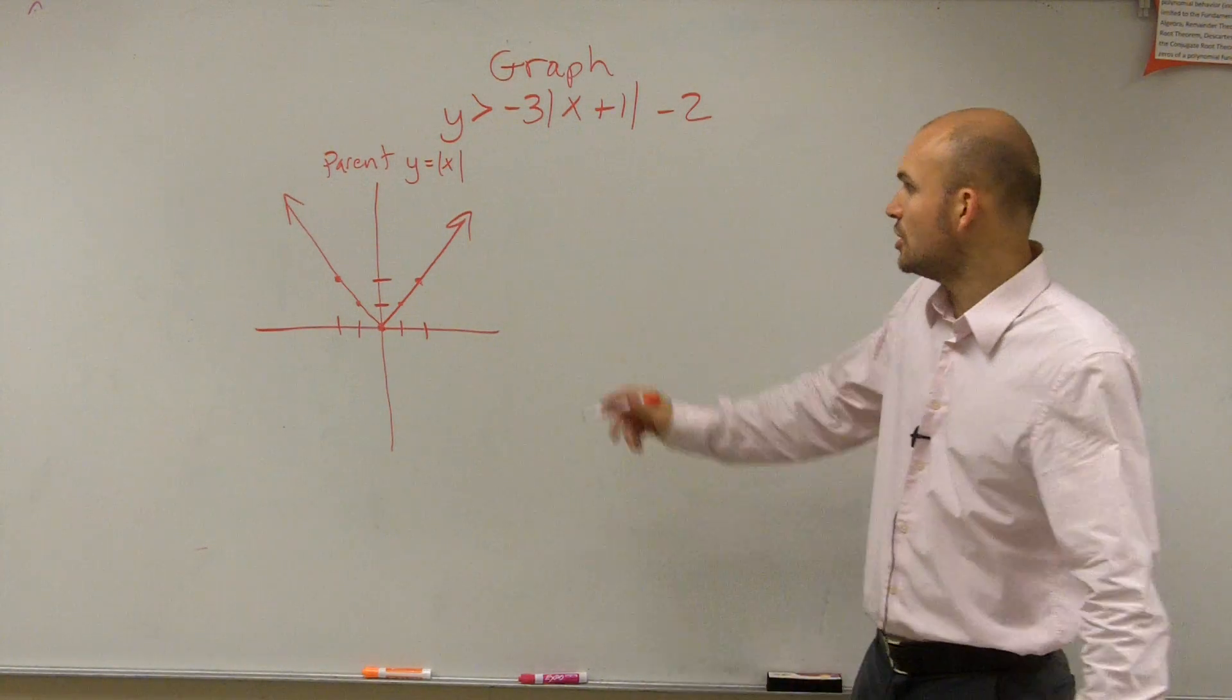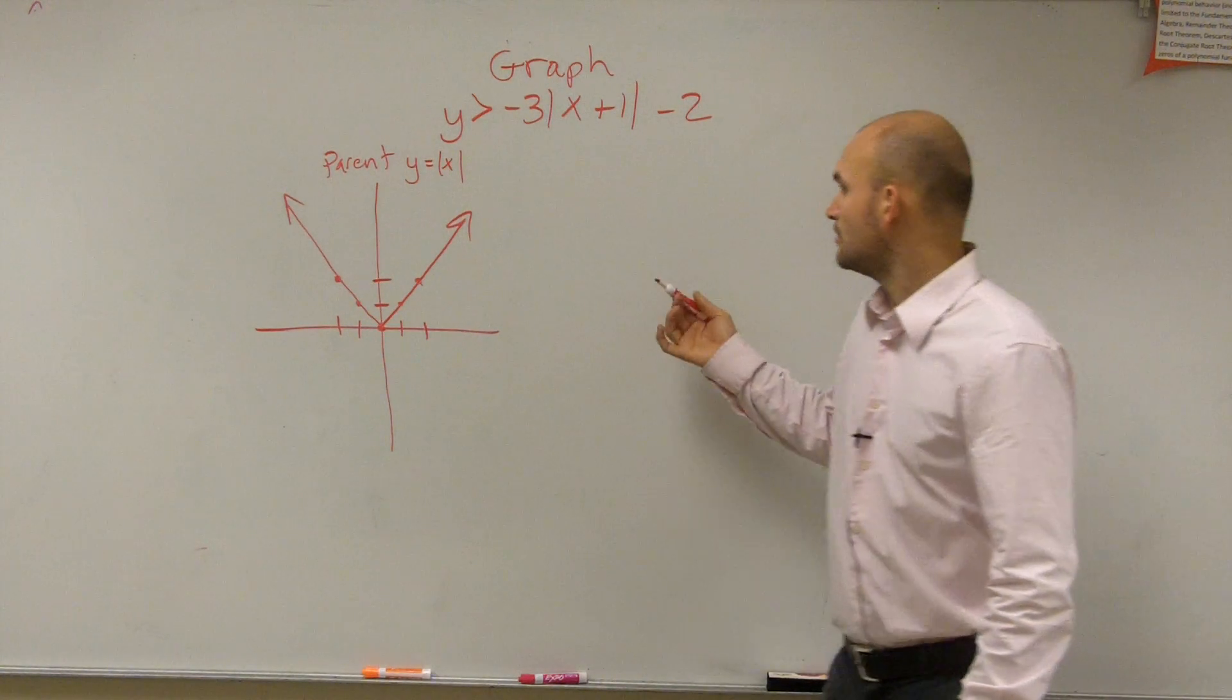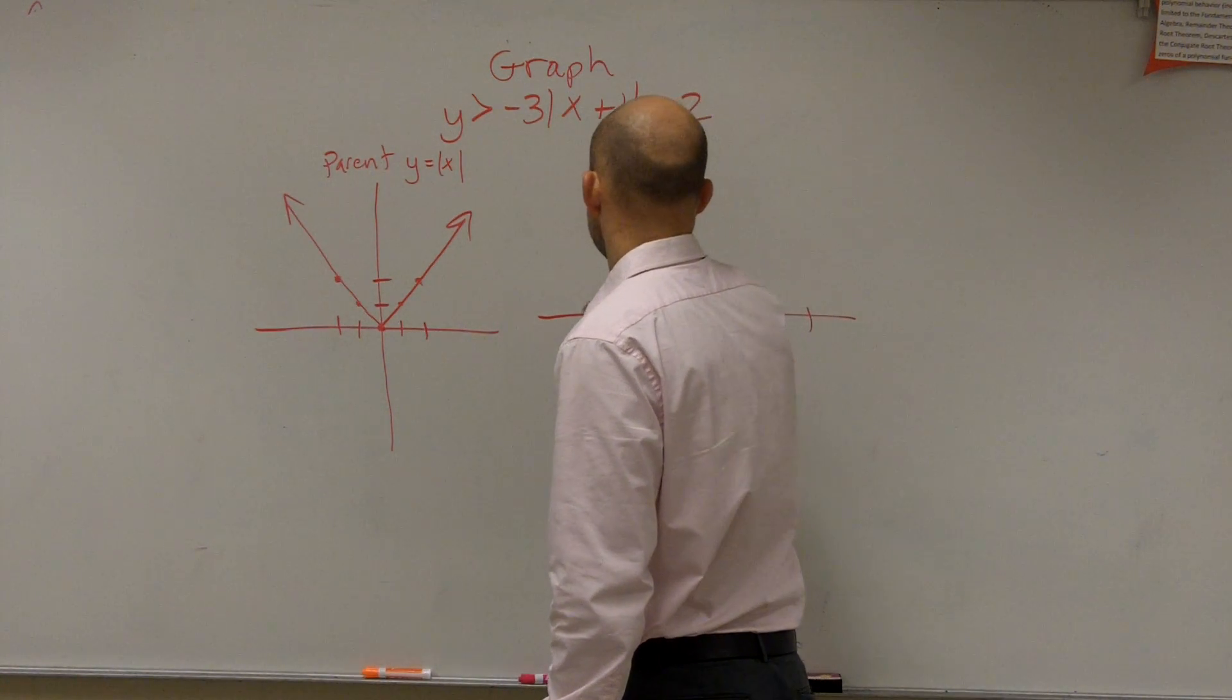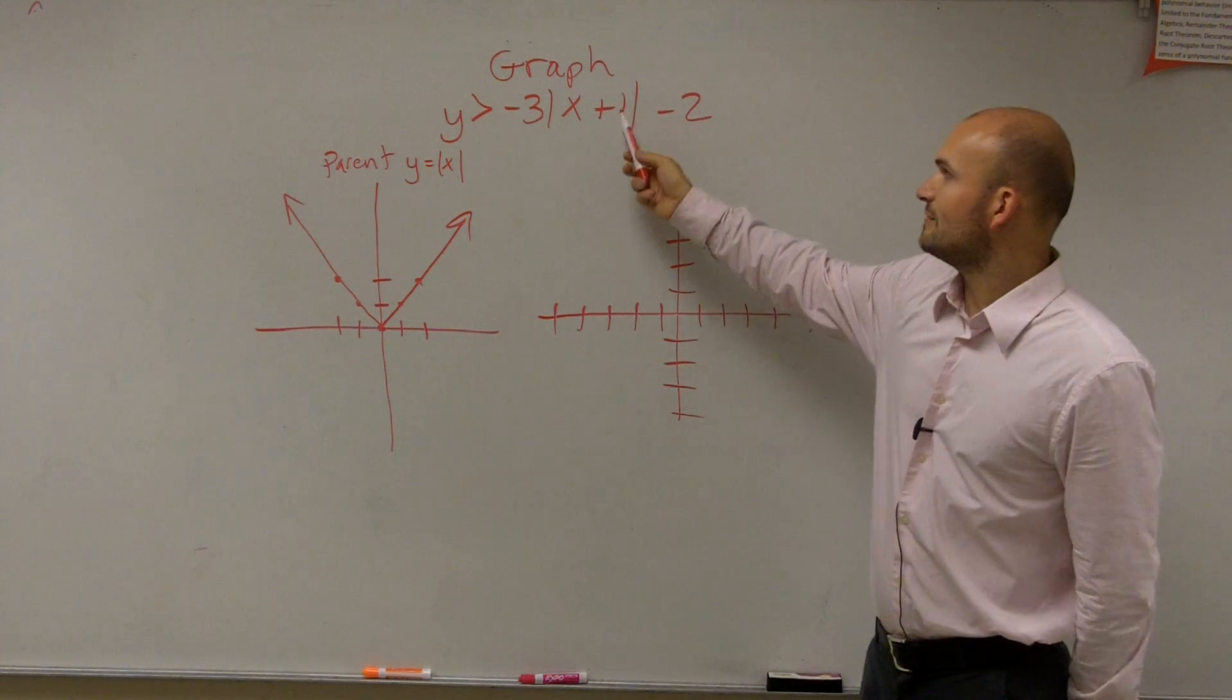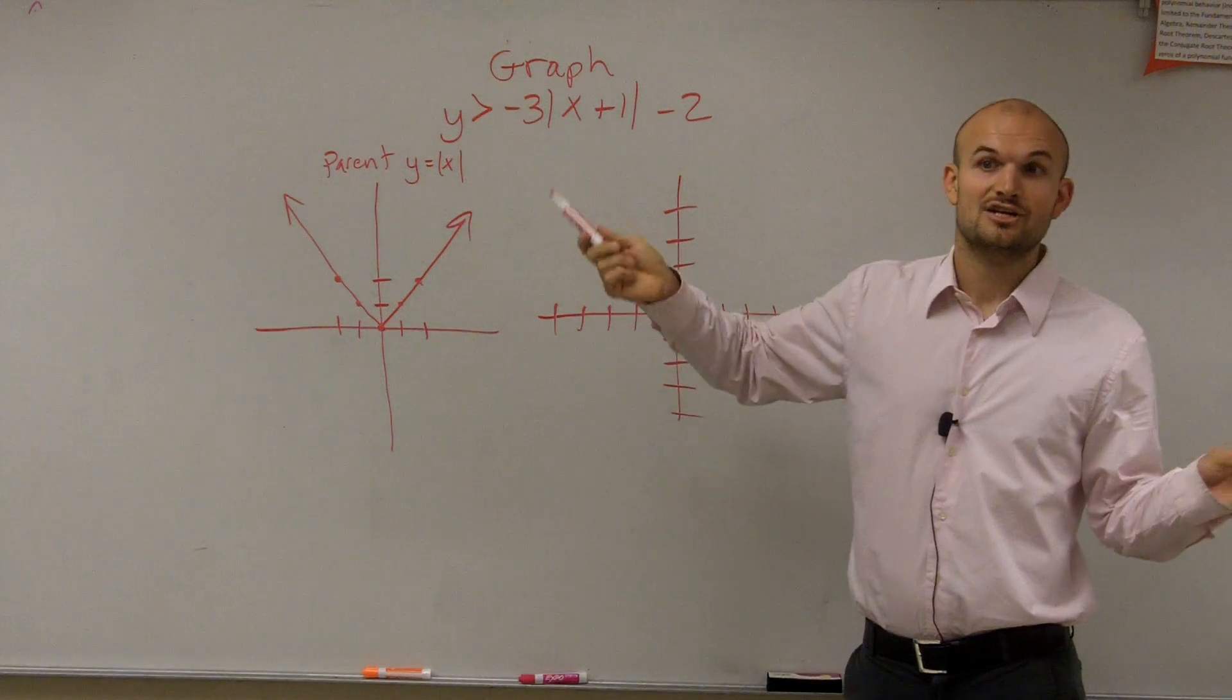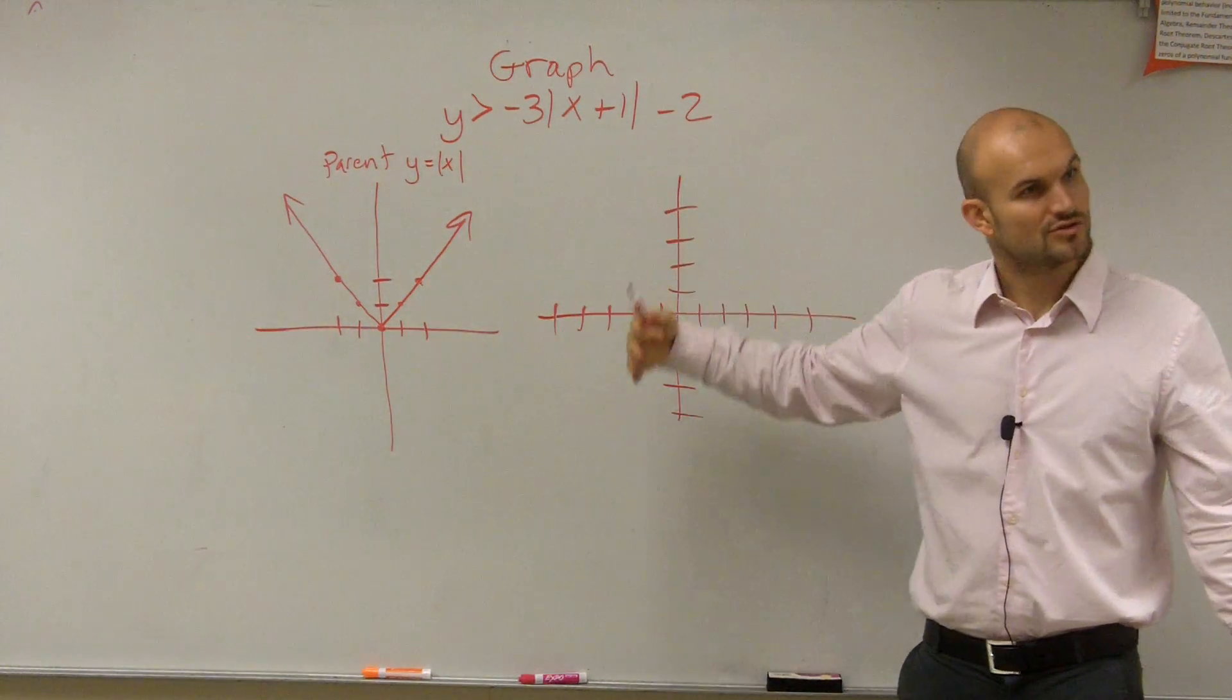Now the next thing is we need to know where's our vertex. So before we pick a table of values to determine the points, we need to know what is happening to our graph. So on my new graph, the one that's going to be the answer, let's look at the transformations. So we have a transformation inside the function and a transformation outside the function. When it's inside the function, that tells us shift left or right. When it's plus 1, that tells us to shift left. Minus 2 tells us to shift down.